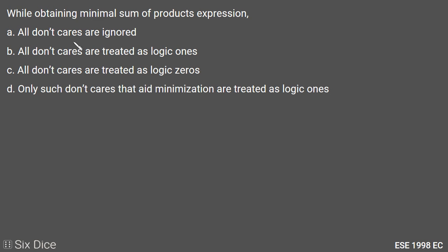Option A is don't cares are ignored. Option B is all don't cares are treated as logic 1. Option C is all don't cares are treated as logic 0. Option D is only such don't cares that aid minimization of the K-map are treated as logic 1. The answer is option D; let's understand why.